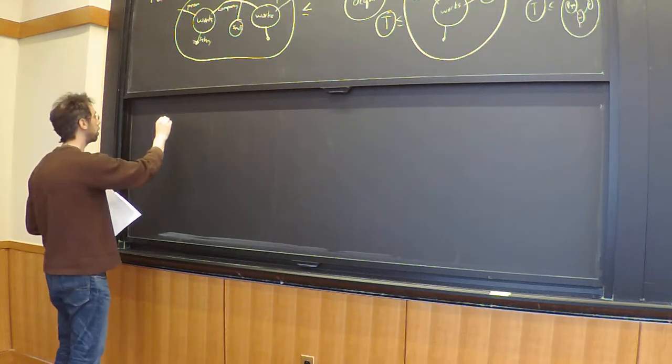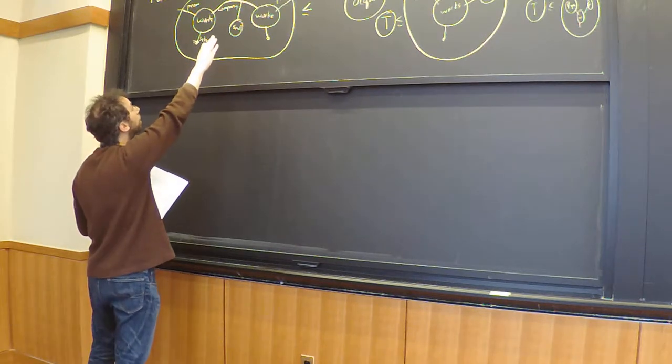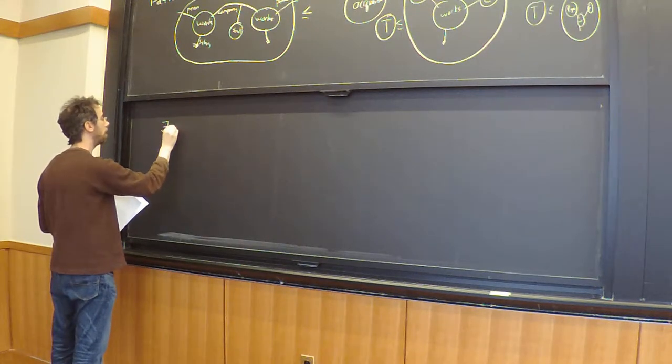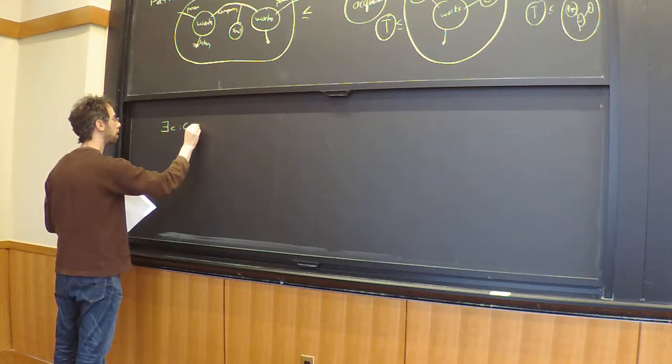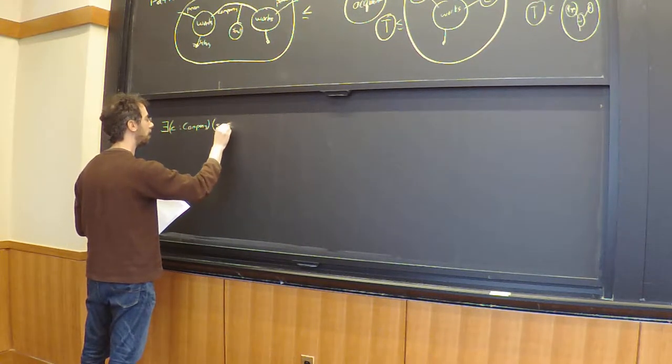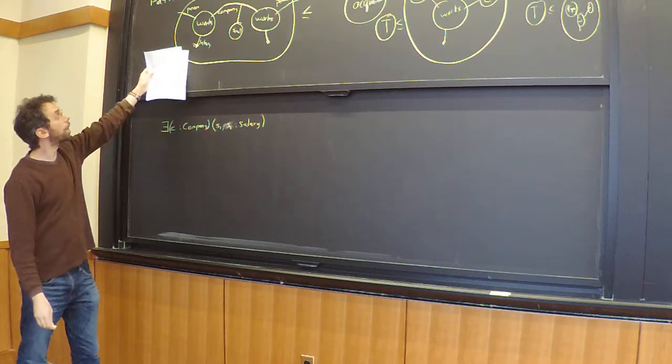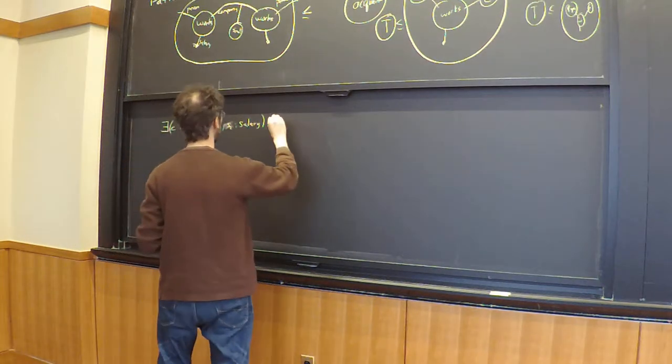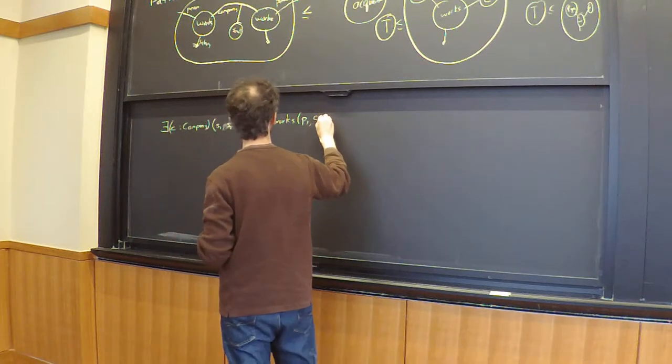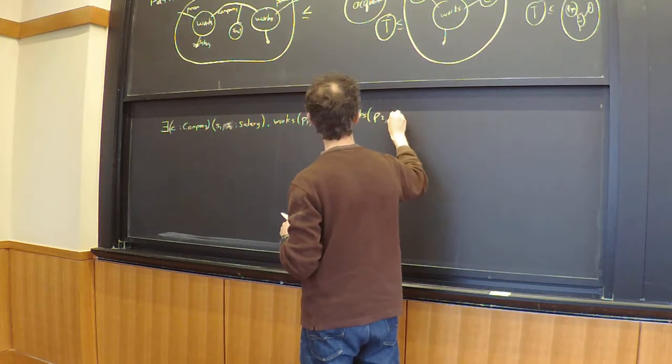Let me try to translate this. This one in logical formalism says that I have... you take all of the variables, all the wires that don't come out, and you put existential statements on them. So you say there exists a company C, there exists a salary S1 and a salary S2, because those are wires that don't come out. Such that works P1, C, S1, and works P2, C, S2.